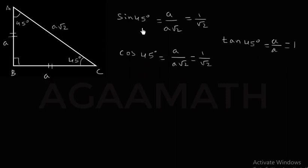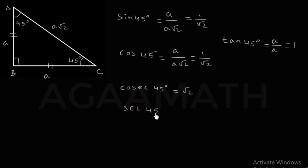Then inverse of sine 45 — cosecant 45 degrees — is √2. Inverse of cos is secant 45 degrees, which is also √2. And cot 45 degrees, inverse of tan 45 = 1, so cot 45 = 1. So these are the trigonometric ratios for 30 degrees, 60 degrees, and 45 degrees.